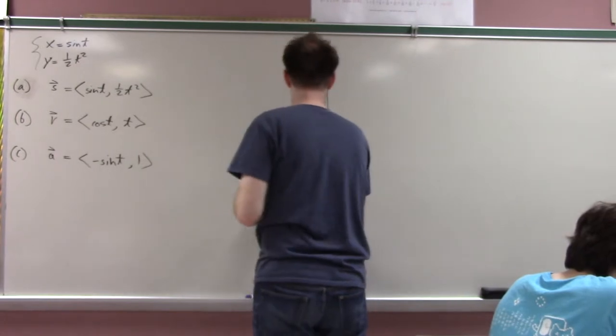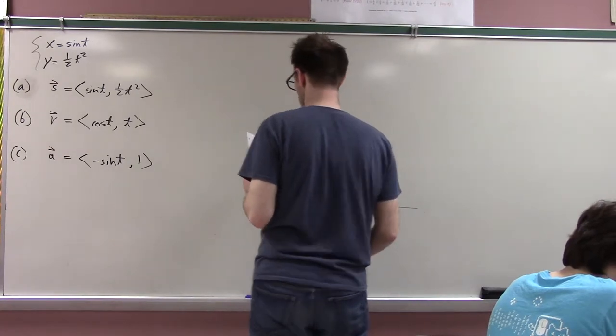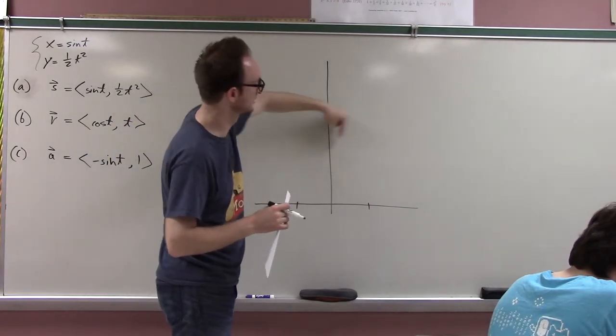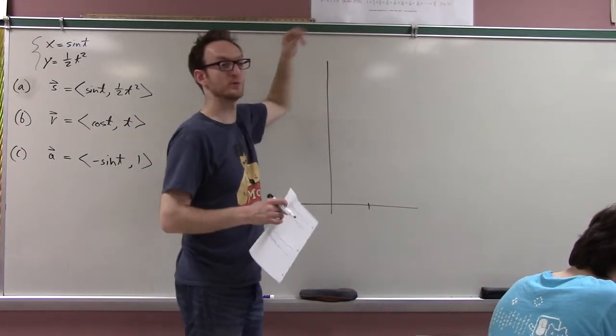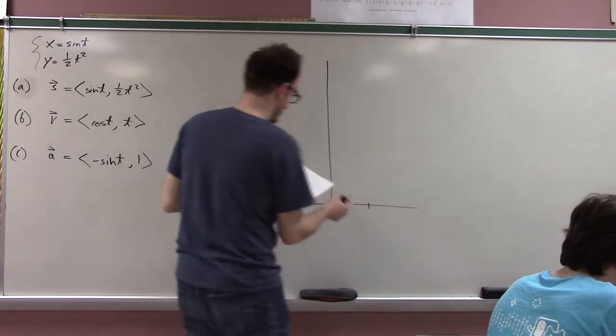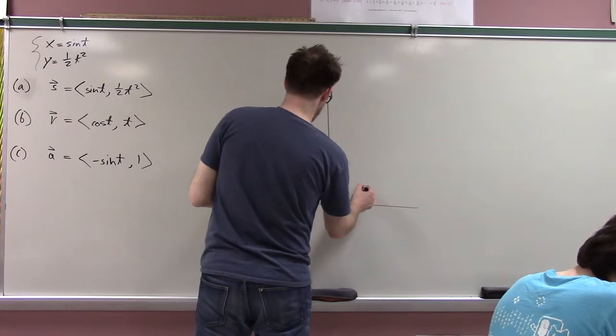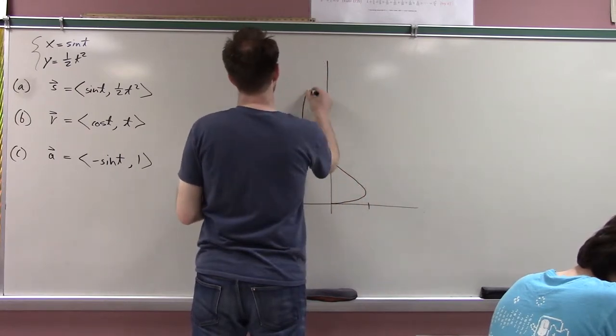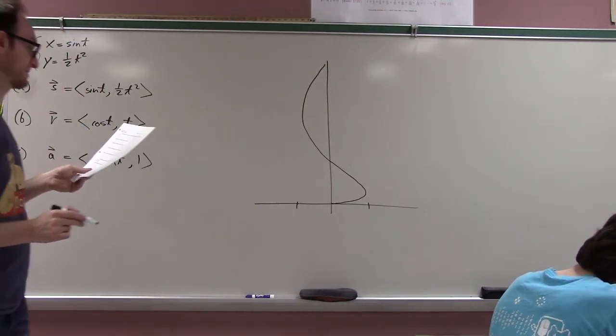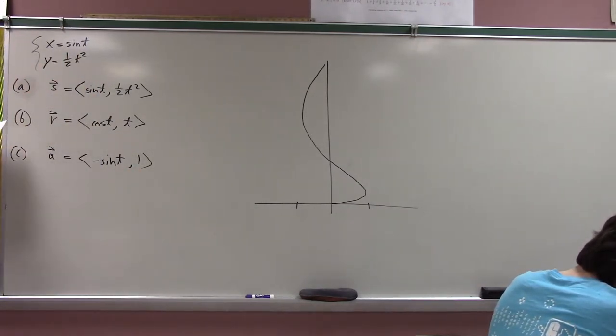There's this little picture here. If you think about what's happening, x is sine t so the x-coordinate is just doing a normal sine curve. But as the x-coordinate is doing the normal sine curve, the y-coordinate is growing like a parabola grows. That's why this is going to have this kind of weird, really slow at first and then continuously moving faster and faster up the y-axis.